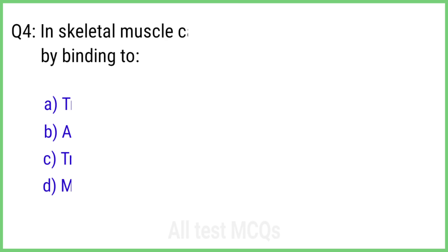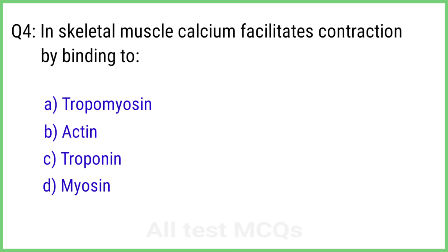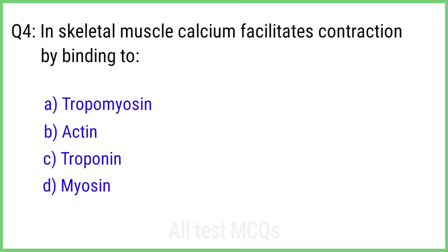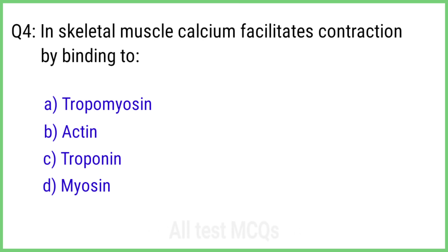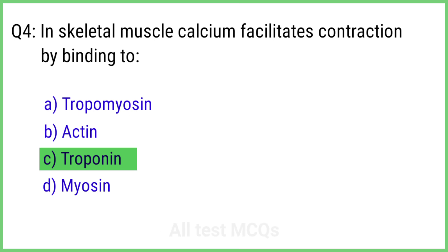Question 4. In skeletal muscle, calcium facilitates contraction by binding to? The right answer is option C: Troponin.